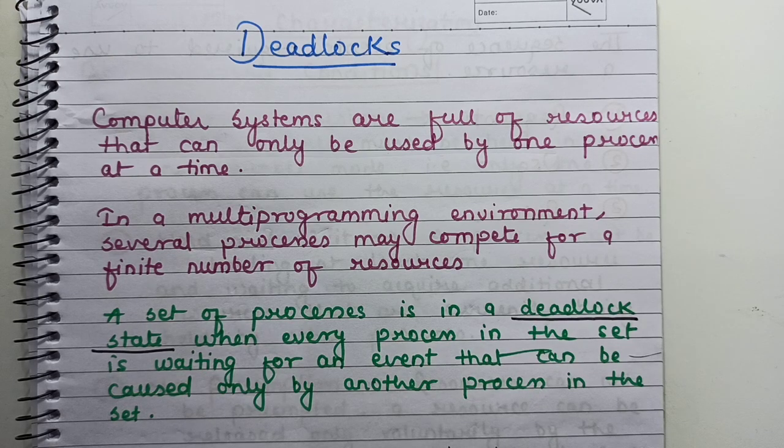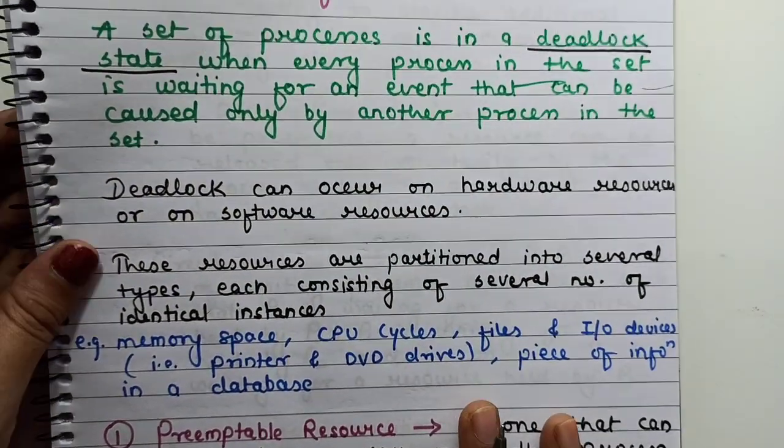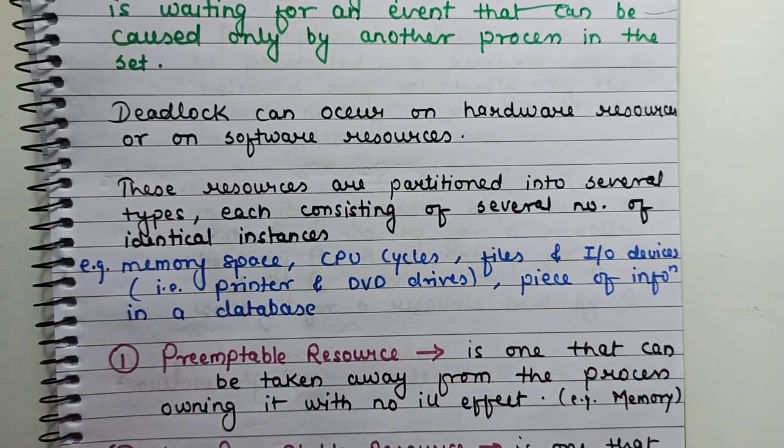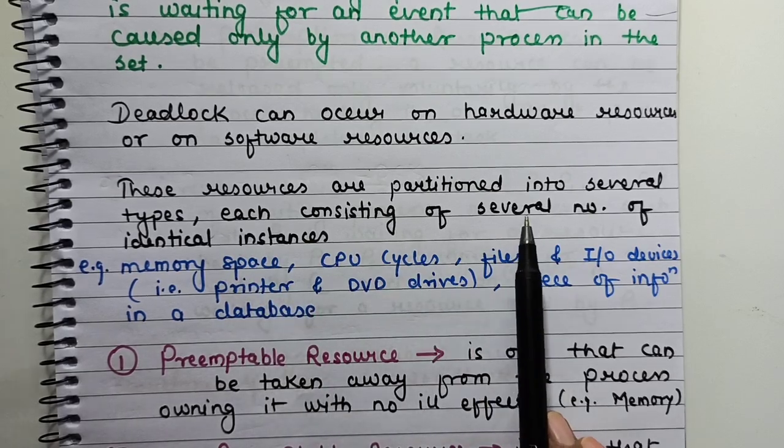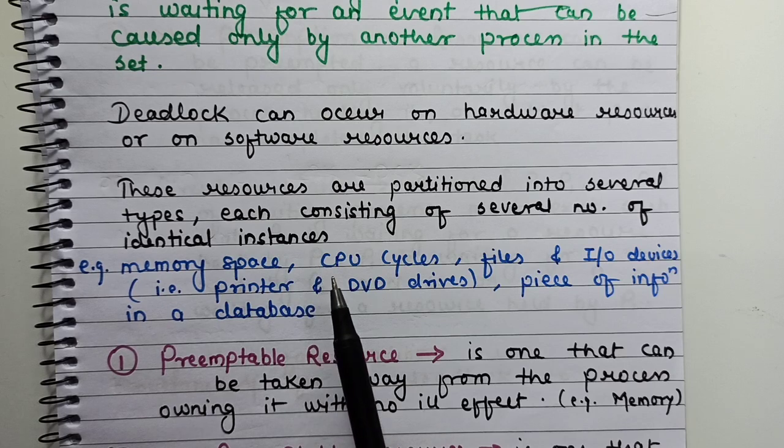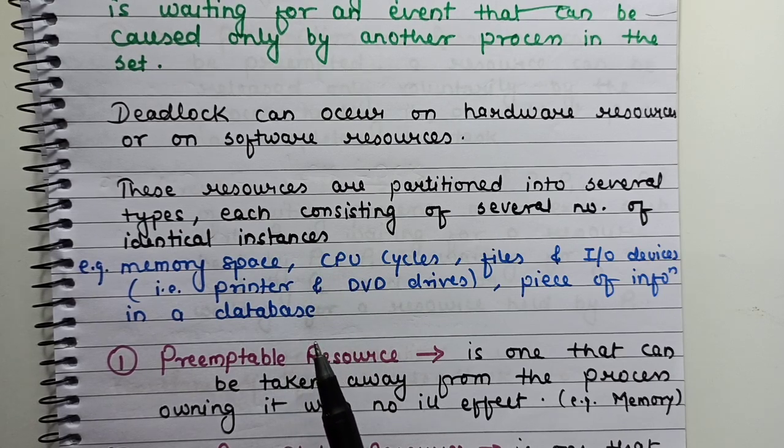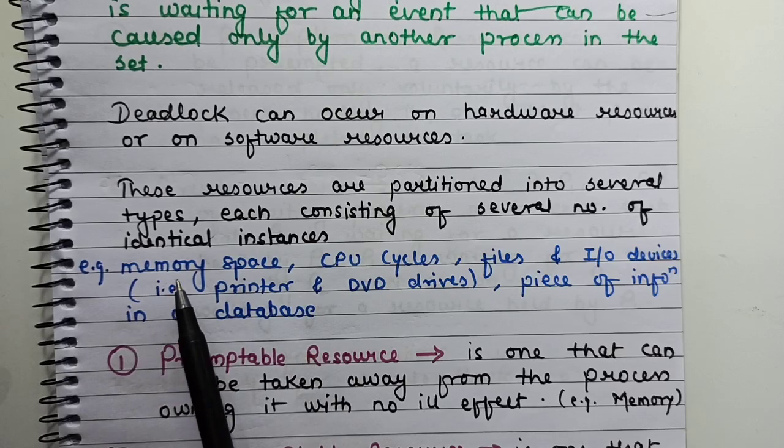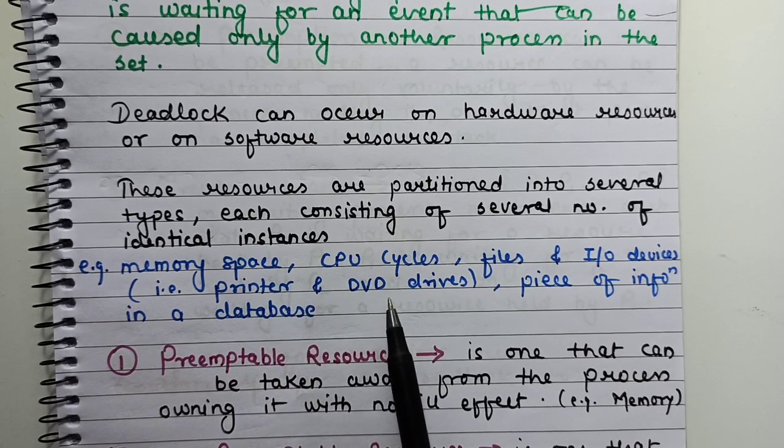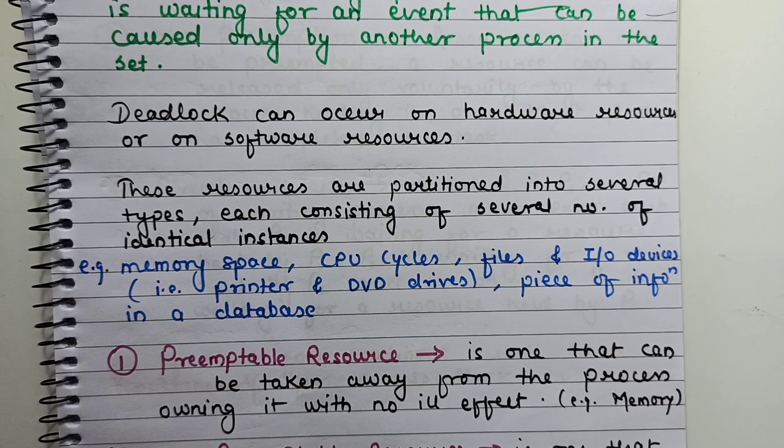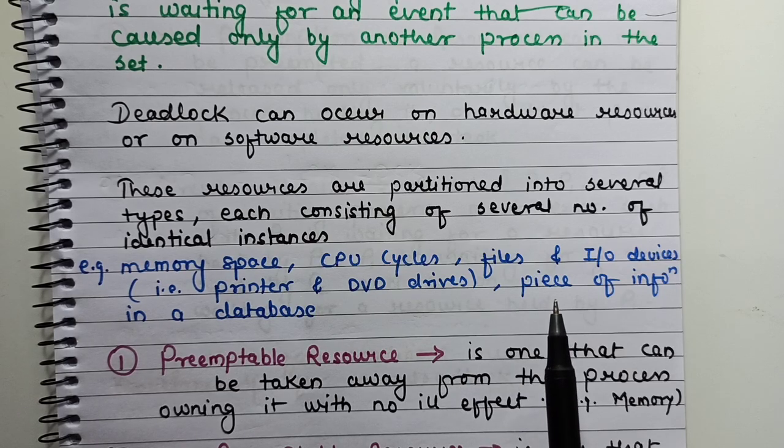What does it mean? We have a set of processes. One process needs a resource which is held by another process in the set, and that process is again waiting for another resource held by another process in the set. This makes a set of processes waiting for each other to release resources, and they all are now deadlocked. Deadlock can occur on hardware resources or on software resources. These resources are partitioned into several types, each consisting of several identical instances like CPU cycles, files, I/O devices like printer and DVD drives, and pieces of information in a database.